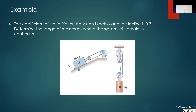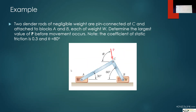The next problem is actually out of the textbook. What I like about it is you can rule away part of the answer right away just from looking at it. It says: two slender rods of negligible weight are pin connected at C and attached to blocks A and B; each weight is W. Determine the largest value of P before movement will occur. If the friction coefficient is the same — 0.3 — under both, and you push down with P, which one's going to move first: A or B?